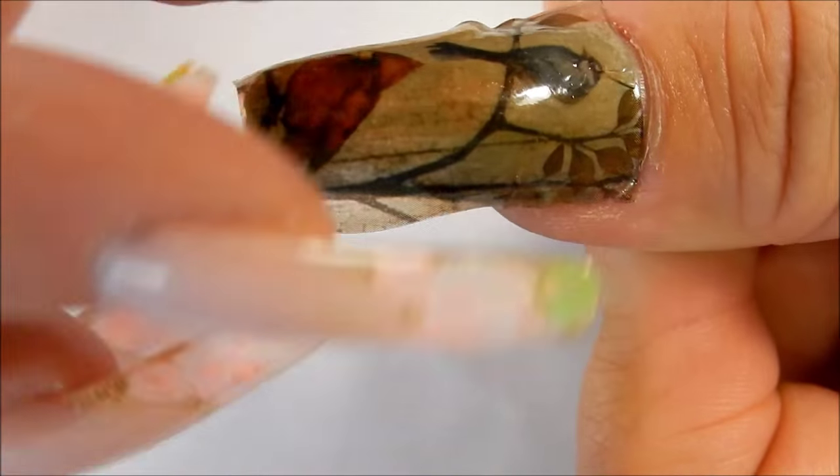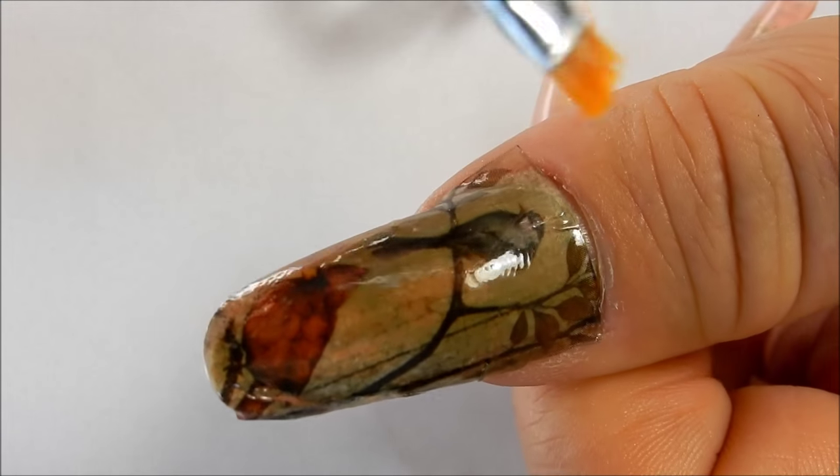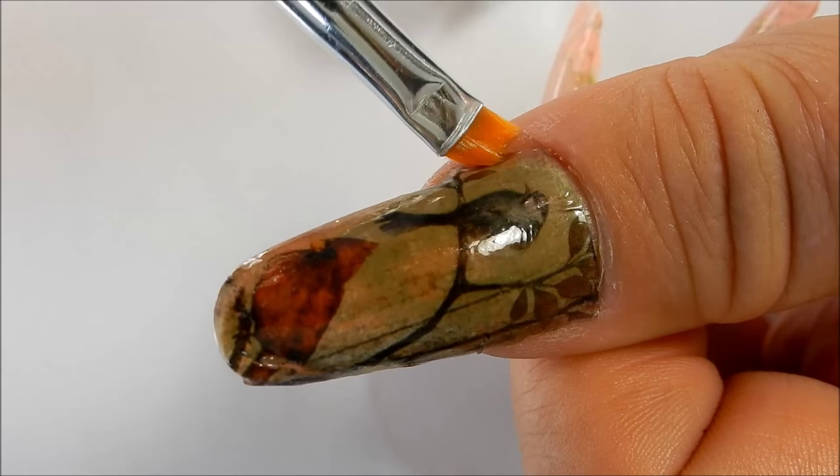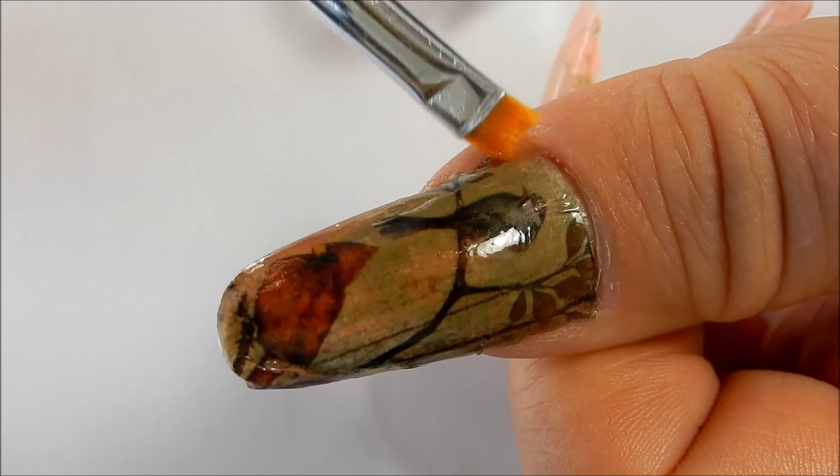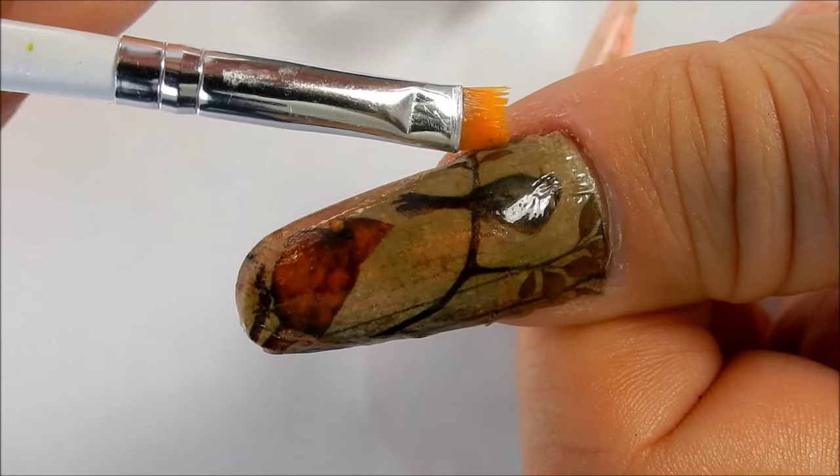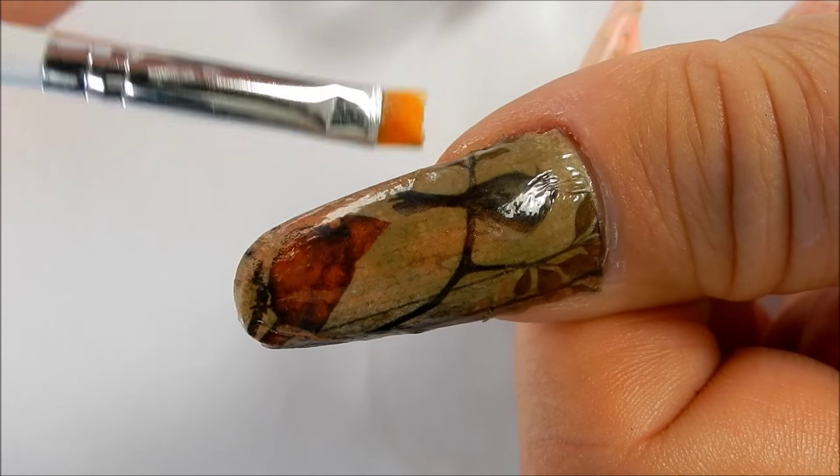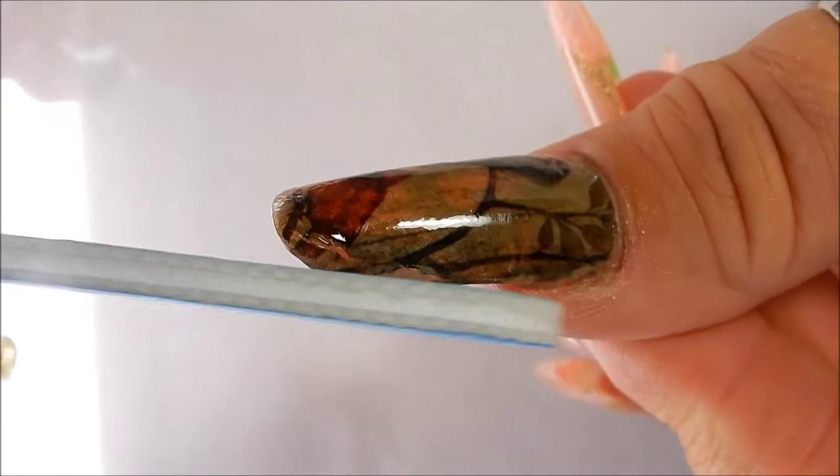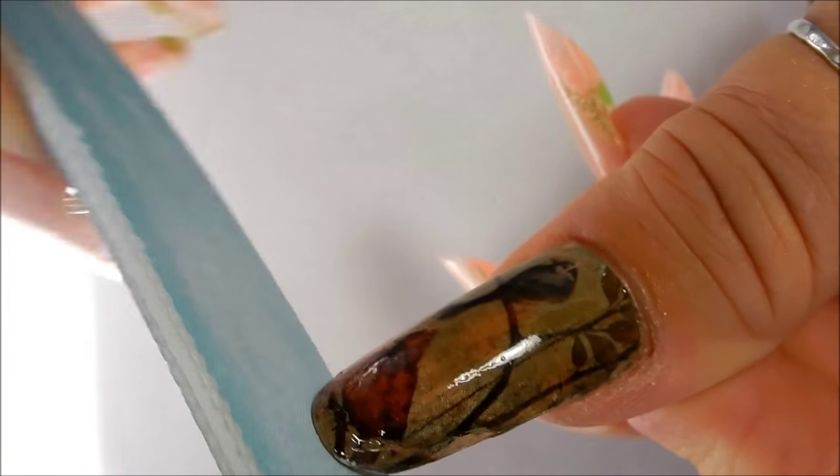Just keep working it on there. Take some acetone and a brush and you can clean up the edges. It'll start to melt the decal and remove it. Here is the 240 grit file. You can just go around the edges to get off any of the leftover decal that you don't want hanging over.